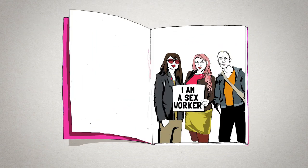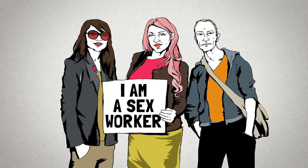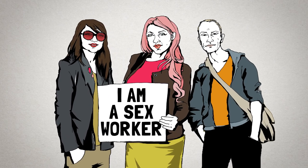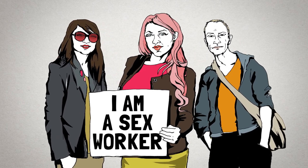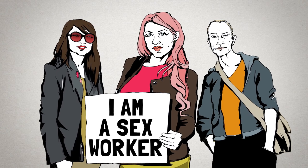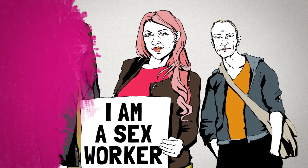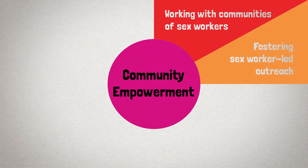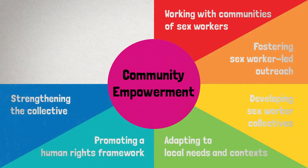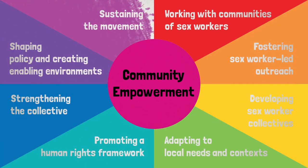Sex workers are at the core of SWIT. Each SWIT chapter was developed by and for sex workers, considering their needs and the strategies that work best to meet those needs. In this video, we'll talk about the first SWIT chapter, Community Empowerment. There are eight key elements of community empowerment.